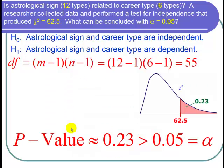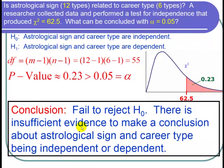So in particular the p-value is about equal to 0.23 and that is greater than the level of significance 0.05 which is alpha. And when the p-value is greater than alpha we fail to reject the null hypothesis.